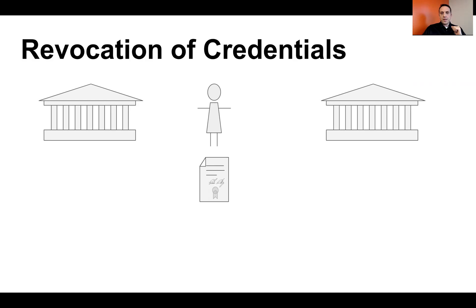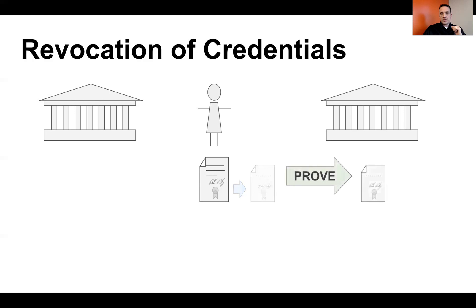Alice now has a credential and she wants to use it to prove something to another institution, perhaps a potential employer. She generates from the credential a proof. You'll notice that the proof is a little bit smaller than the credential and doesn't have as much information, but it does still contain some digital signature material. Once she has generated this proof specifically for the relying party, she transmits it in a proving interaction and the relying party sees it.